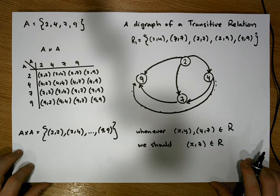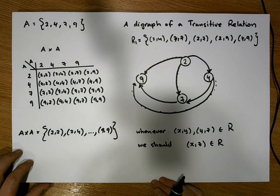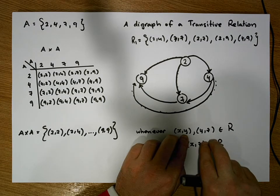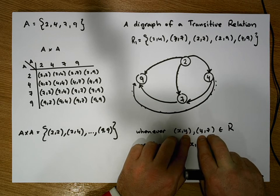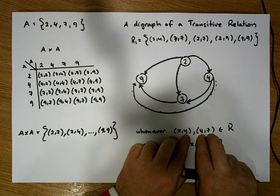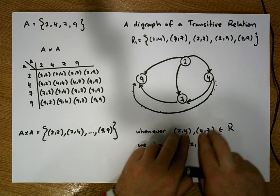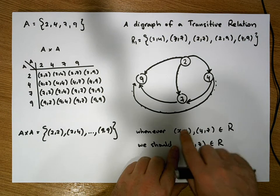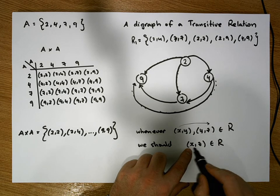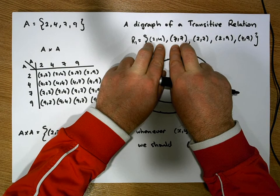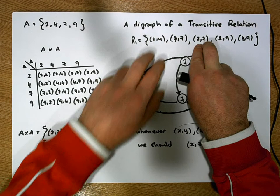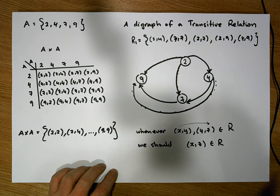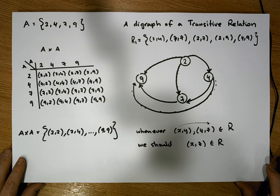I hope this short video on transitivity helped demystify what a transitive relation looks like. Just keep in mind: once we pick two ordered pairs (x, y) and (y, z) where the range value in the first pair equals the domain value in the second, if the relation is transitive we should be able to go directly from x to z. For example, we can go from 2 to 4 and 4 to 7, so if it's transitive I should be able to go directly from 2 to 7 — which we can. This was Jonathan Lambert with the Mathematics Development and Support Service at the National College of Ireland. Thank you.